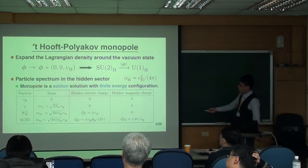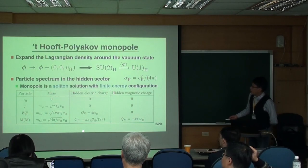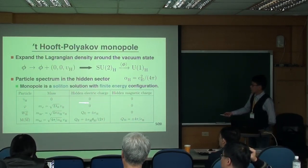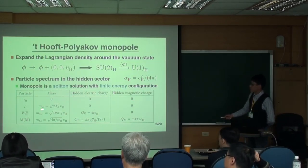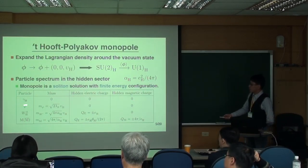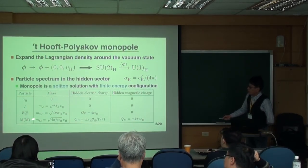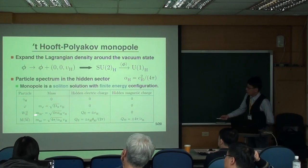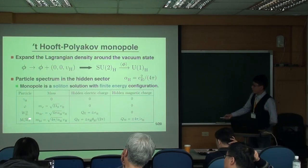So in this table, this is the particle spectrum in this model. Of course, we have this hidden photon, which is massive and has no electric charge and magnetic charge. We have this isoscalar which is massive. And we also have this hidden gauge boson. And again, we have a monopole, also an anti-monopole.